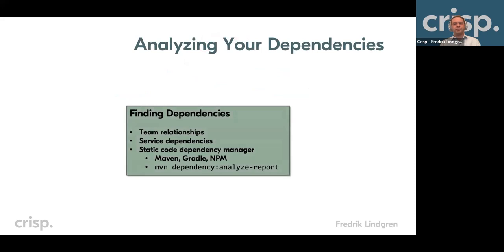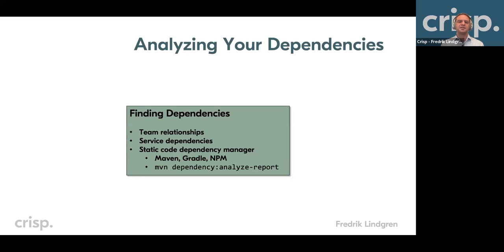So how do we go about this? Number one is actually finding or listing your dependencies — it can be the teams you depend on, services, but in terms of actual code you can use your dependency manager: Maven, Gradle, or NPM, depending on your platform. If you're using Maven, you can run the Maven dependency analyze report, which will list your dependencies and also tell you what you've declared but might not be using, as well as dependencies you haven't declared but are using because it's easy in modern IDEs to import something from a transitive dependency that just happens to be on your classpath.